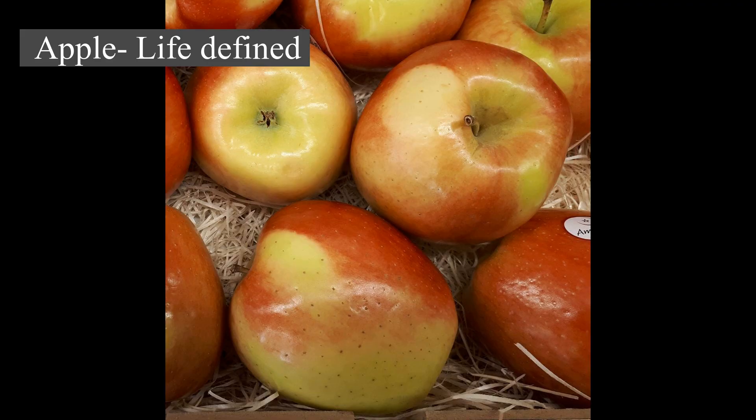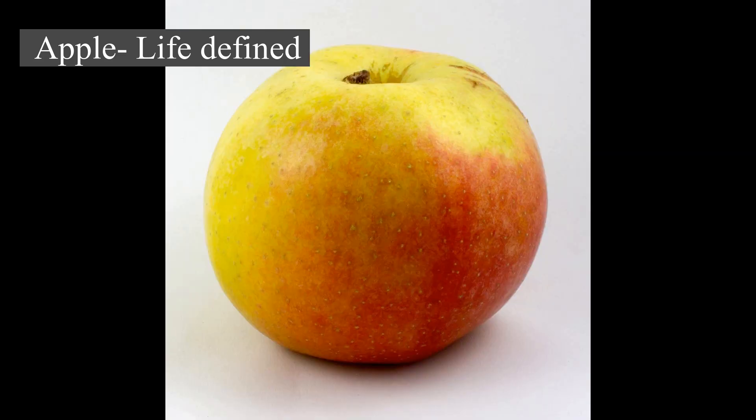Apples grown from seed tend to be very different from those of their parents, and the resultant fruit frequently lacks desired characteristics. Generally, apple cultivars are propagated by clonal grafting onto rootstocks. Apple trees grown without rootstocks tend to be larger and much slower to fruit after planting. Rootstocks are used to control the speed of growth and the size of the resulting tree, allowing for easier harvesting.